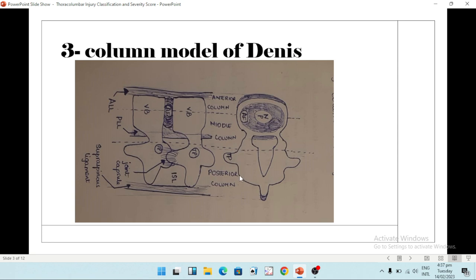Now the posterior column, not to be confused with the posterior ligamentous complex, the posterior column consists of the posterior arch of the vertebra and the posterior ligamentous complex.